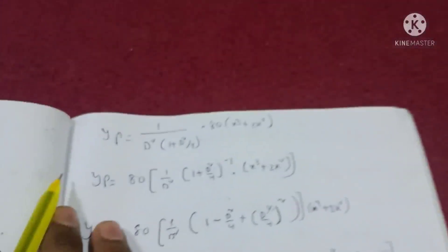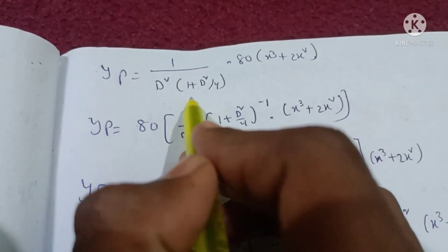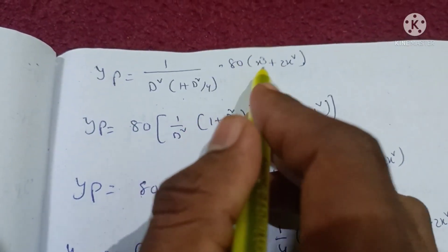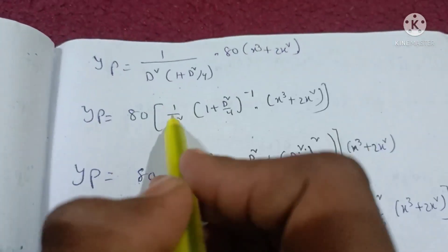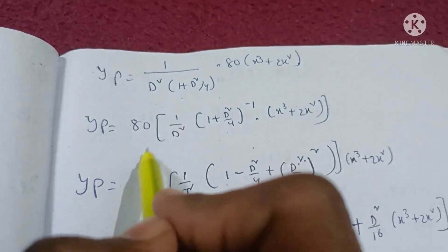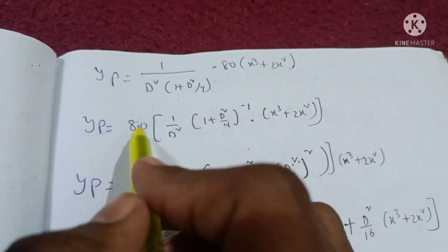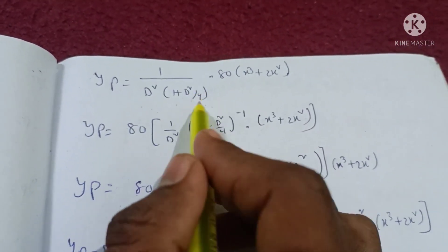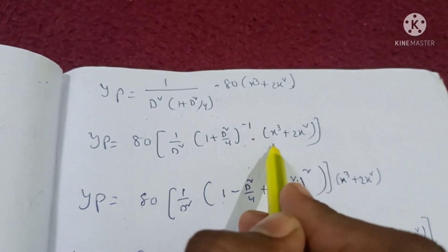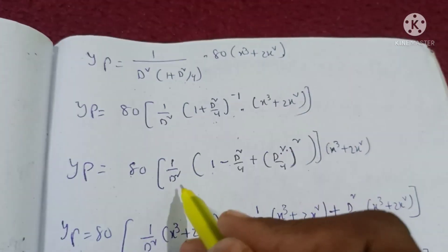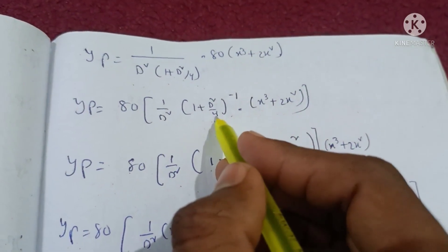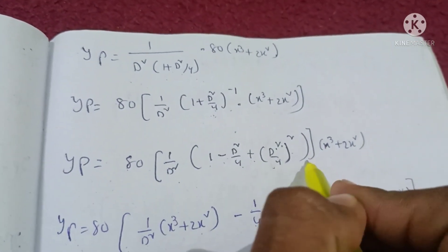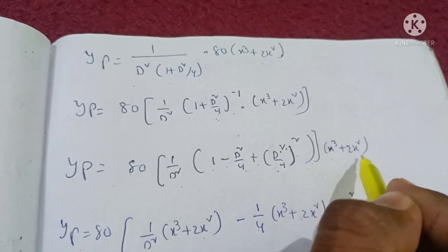So yp equals 1 by D squared divided into 1 plus D squared divided by 4, whole inverse, into x cubed plus 2x squared. Expanding: 1 by D squared into 1 minus D squared by 4 plus D squared by 4 whole squared into x cubed plus 2x squared.